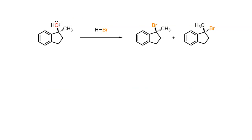To summarise, benzylic alcohols react with strong halide acids to give benzylic halides through a resonance stabilised carbocation. If the carbocation happens to be prochiral, a racemic mixture of benzylic halides is formed.